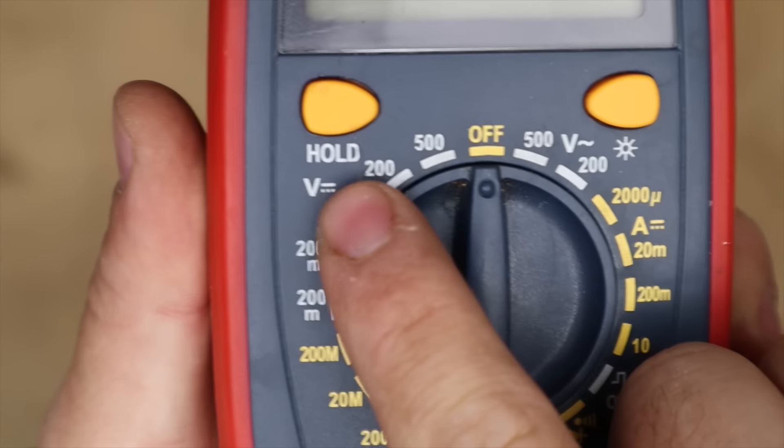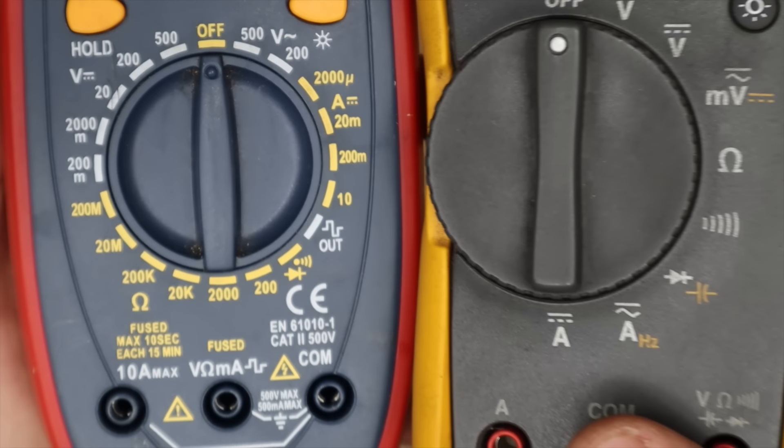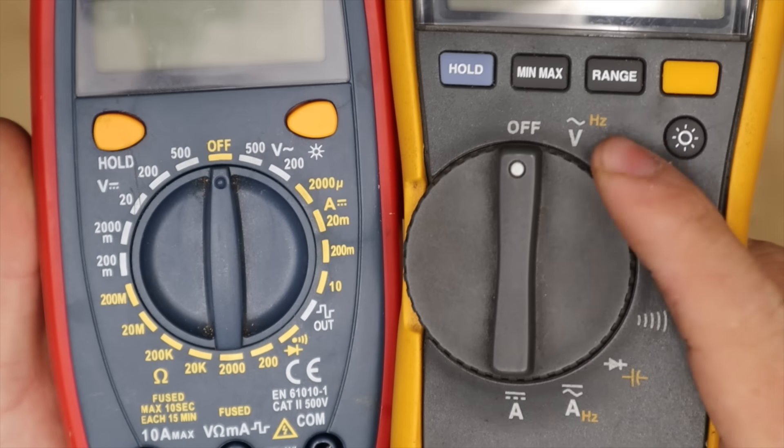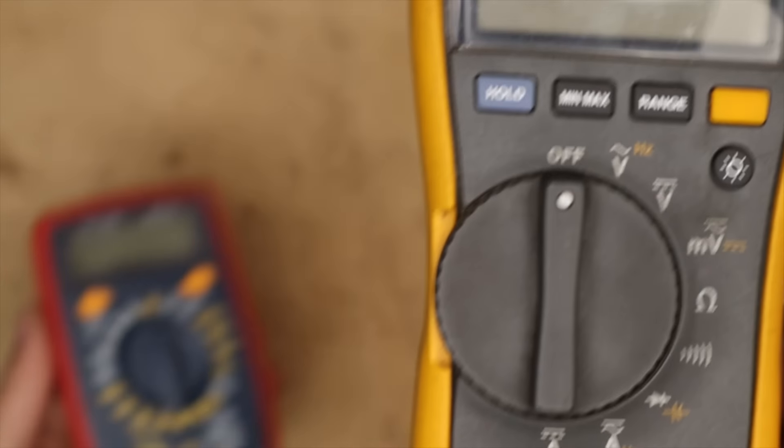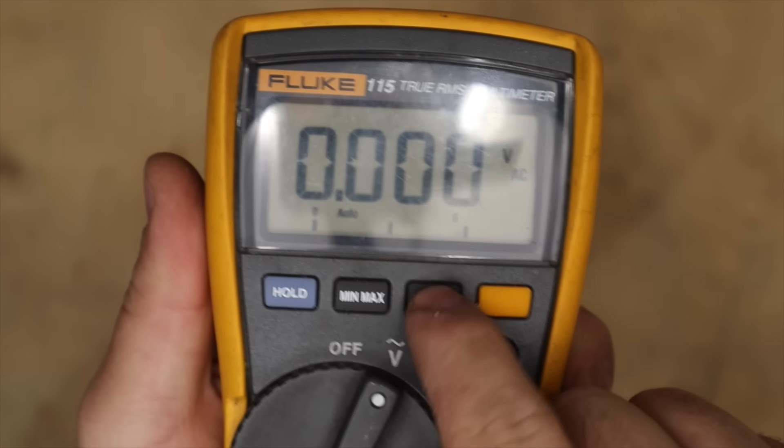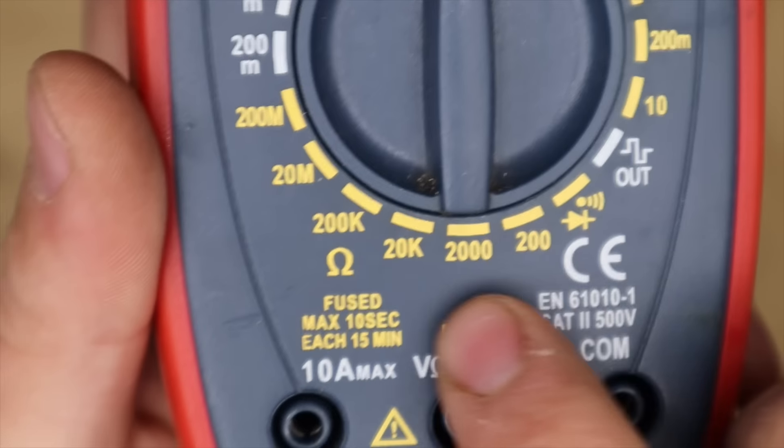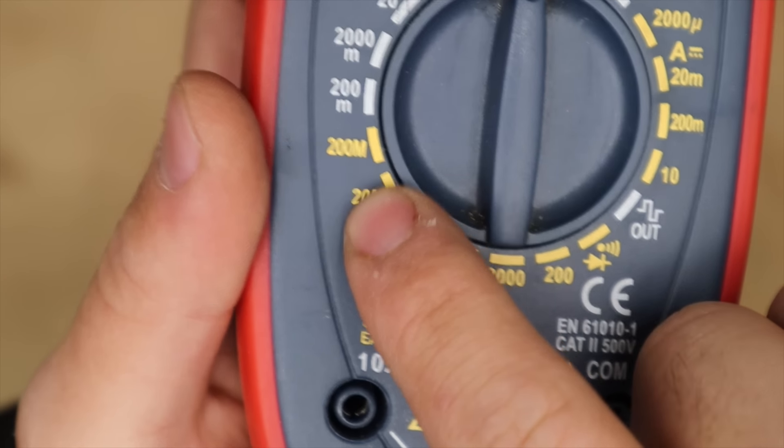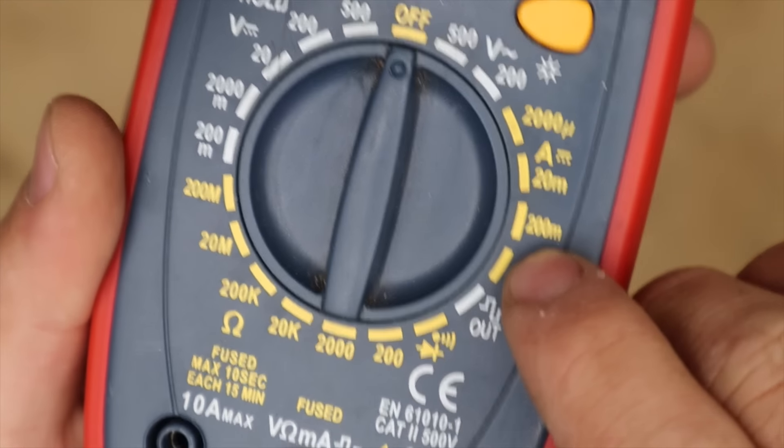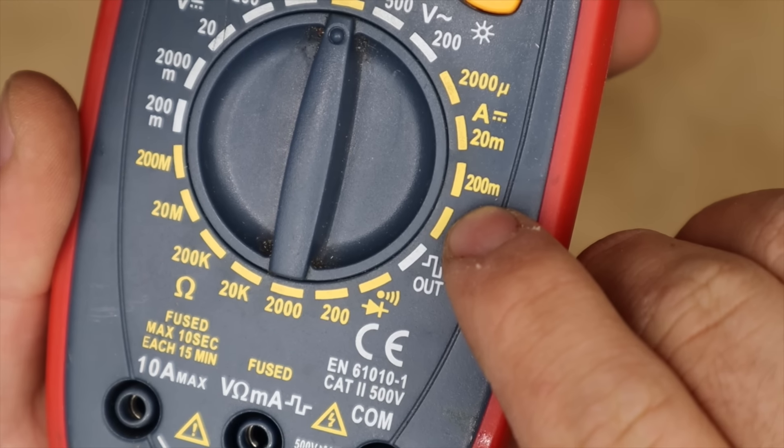For example this is a manual ranging meter. A meter with no numbers is auto ranging and will automatically switch between values. Though these meters still allow you to manually select the range with this button. But then we have other meters that don't have auto ranging. With meters like this you have to select the correct range to get a result. And as we can see we have a lot of our units here.